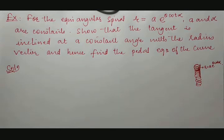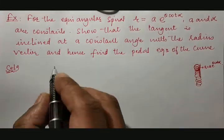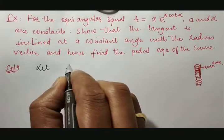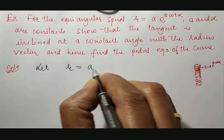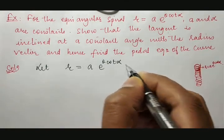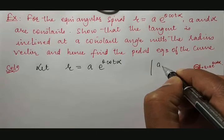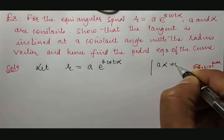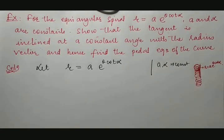Let us solve this using basic knowledge. In this example, very first I will take the given curve: r is equal to a into e raised to theta into cot alpha, where a and alpha are constants.